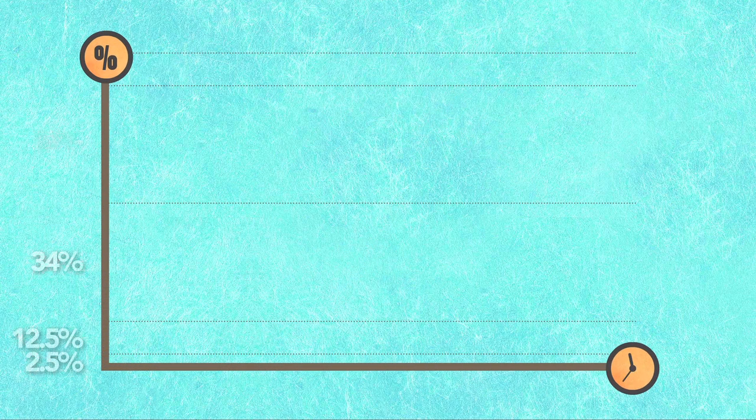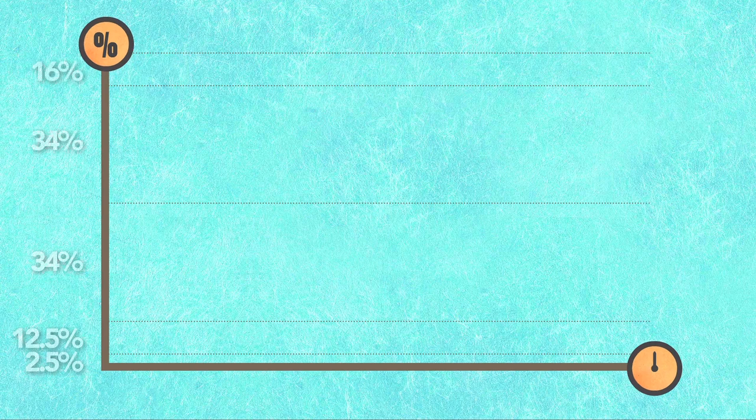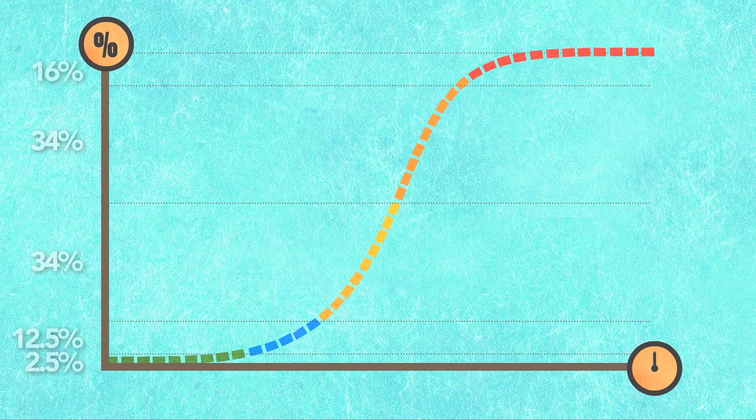Now what researchers have found is that for any given innovation, a graph of the rate of adoption looks like a stretched-out S-curve with a flat beginning, steep middle, and flat end. Let's take a look to see how this happens.